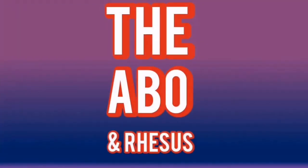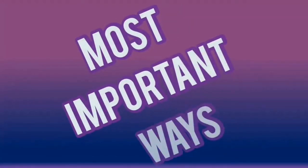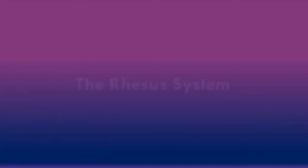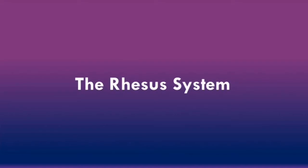The ABO and rhesus blood grouping systems are the most important ways of classifying a person's blood type. Let's now discuss the basics of the rhesus blood grouping system. Make sure to check out our previous video where we discussed the basics of the ABO blood grouping system.